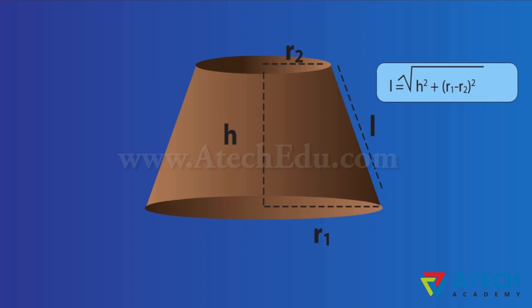Let H be the height, L be the slant height, and R1 and R2 the radii of the bases. Here, R1 is greater than R2.